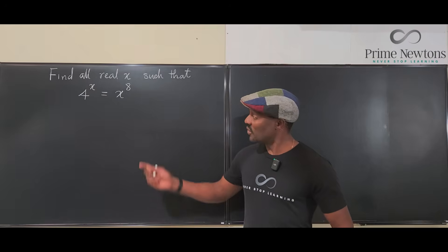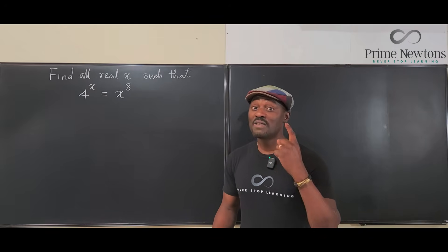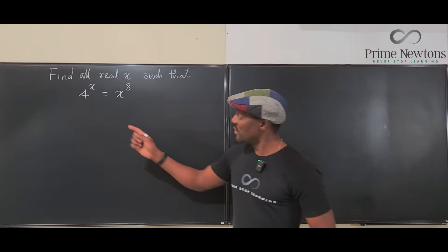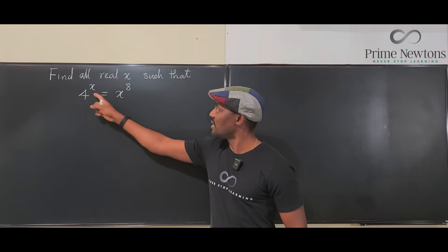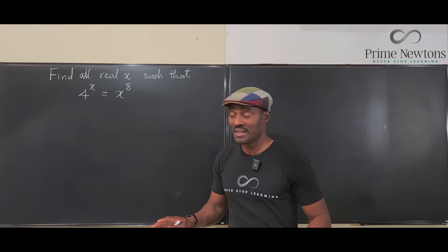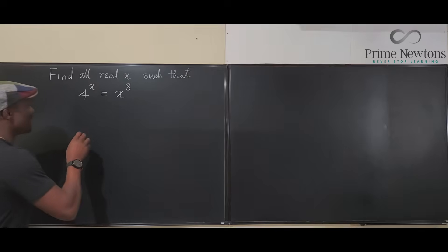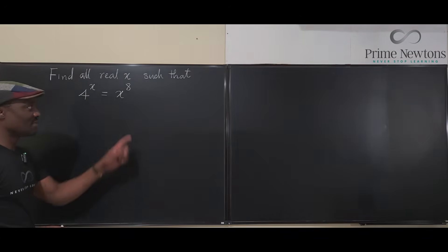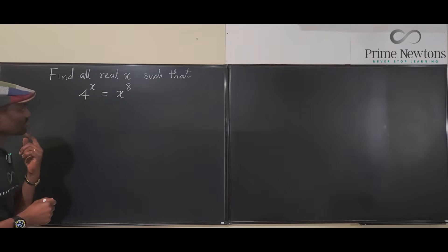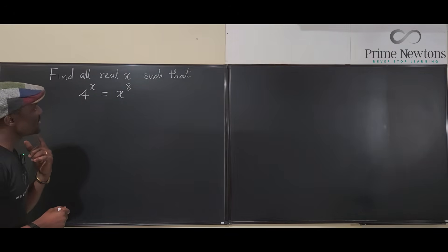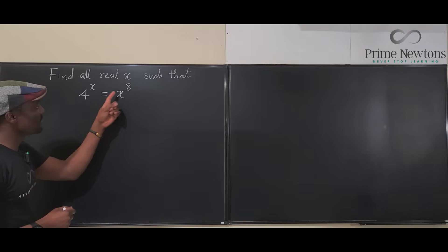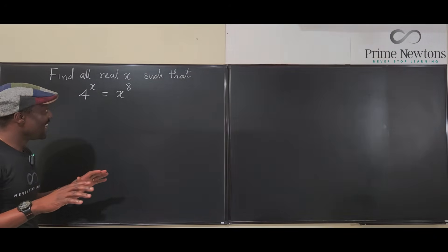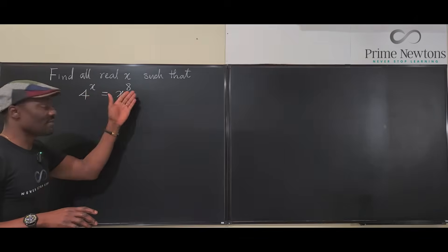For any problem that looks like this, a good strategy that would give you one answer is this: you want to make sure that this X stays with this guy and this eight stays with this guy. So if I want to get rid of this X, I have to divide this by X. If I want to get rid of this eight, I have to divide by eight. So I'm going to raise both of them to one over eight X.